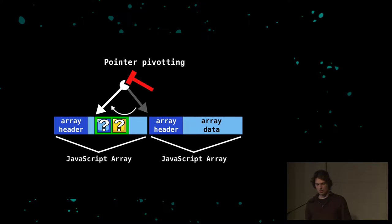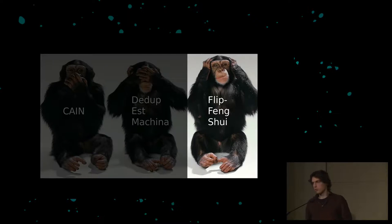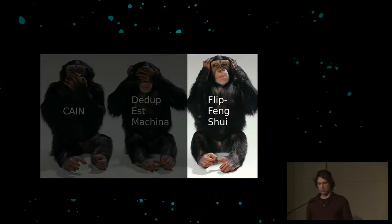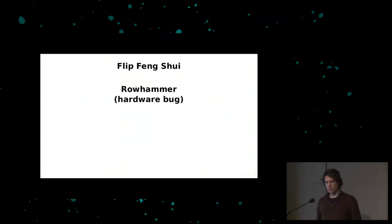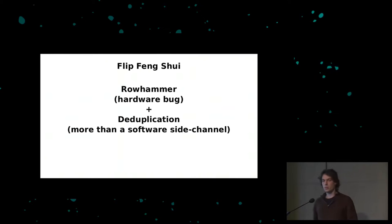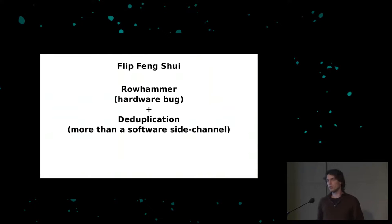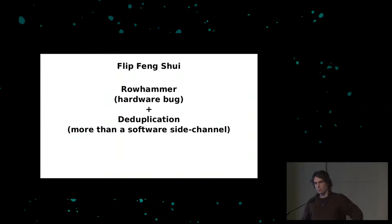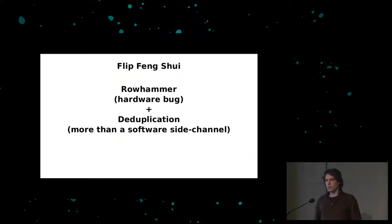That's the second attack. In the third attack, Flip Feng Shui, we also use Rowhammer in combination with deduplication, but in a different way. We won't be using deduplication as a software side channel anymore — instead we'll use it to make Rowhammer a more useful exploitation primitive.